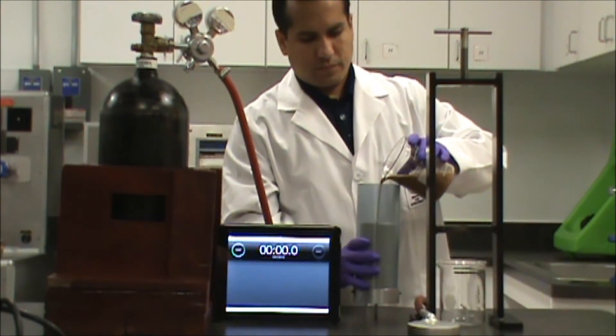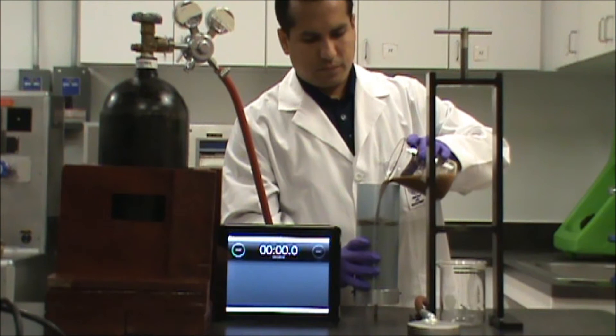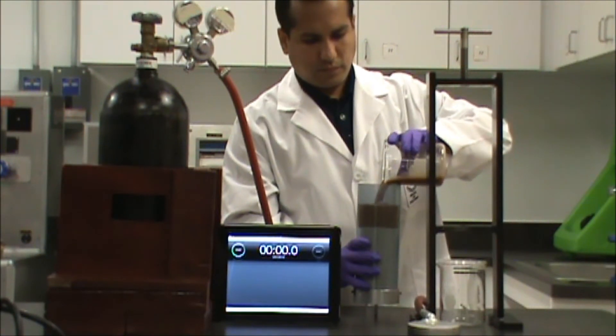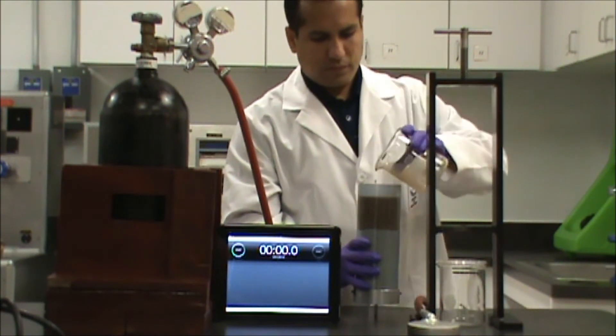We prepare the base mud, a 22 pound per barrel bentonite mud, in fresh water. The mud is sheared until fully yielded at ambient temperature.